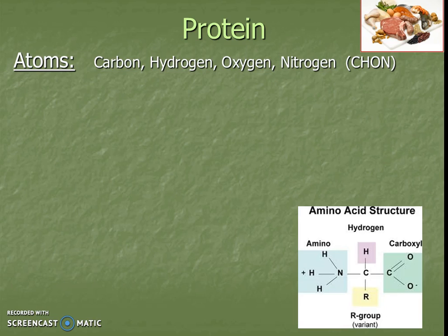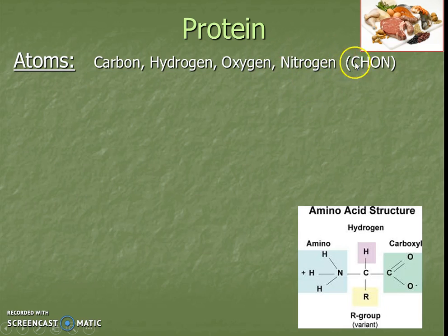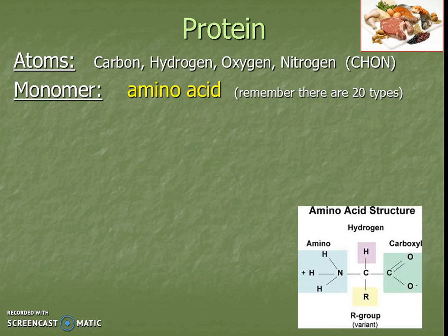Next is protein. We have the same atoms plus a couple new ones: carbon, hydrogen, oxygen — our CHO — and now we also have nitrogen, which gives us the memory tool 'CHON' to remember the atoms of a protein. The basic building block is an amino acid, and amino acids will form an amino acid sequence, sometimes called a polypeptide. There are 20 different types.